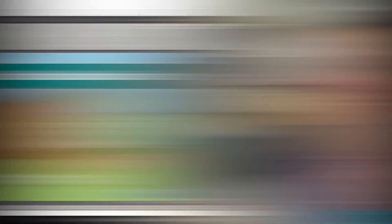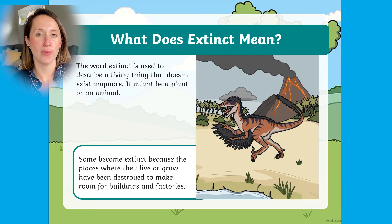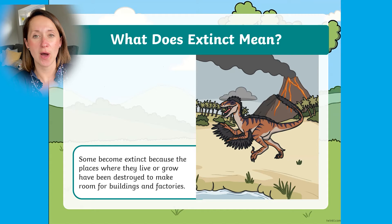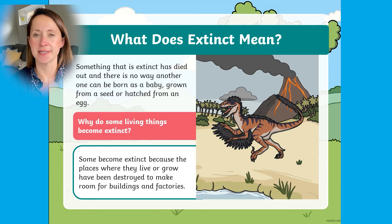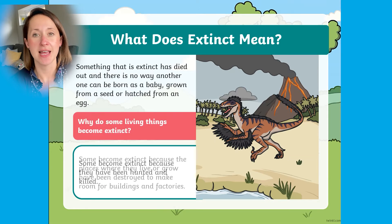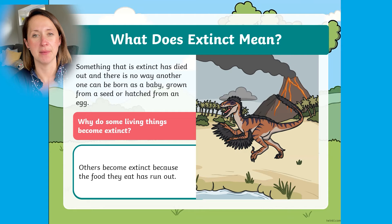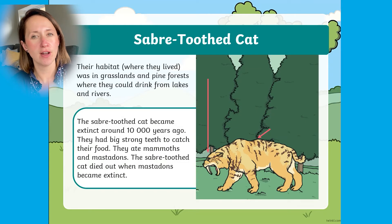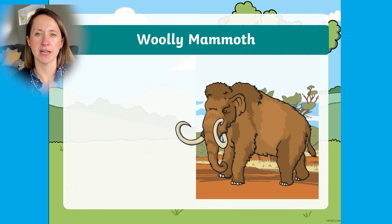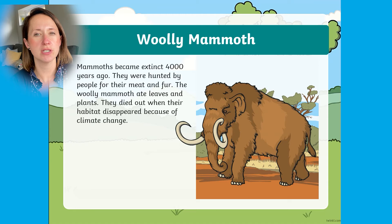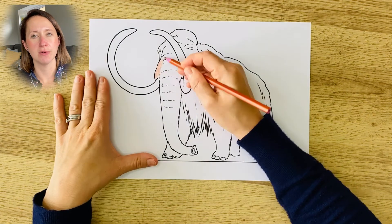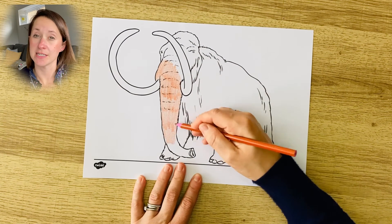The Key Stage 1 Extinct Animals PowerPoint is great for teaching children about animals that have become extinct. It explains what the word 'extinct' means, as well as introducing children to some of the animals that unfortunately have become extinct. Follow this up with some mindful colouring where children can think about what they can do to support animals that are endangered.